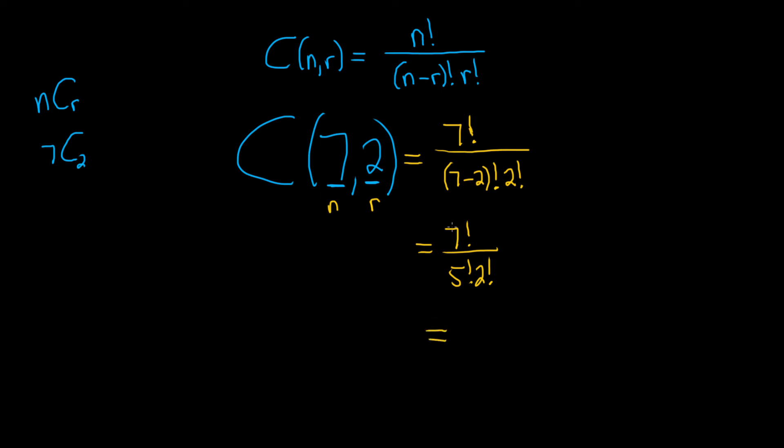7 factorial is 7 times 6 times 5 times 4 times 3 times 2 times 1. You just count down. We can write this as 7 times 6 times 5 factorial. We do that because we can cancel 5 factorial in the next step.